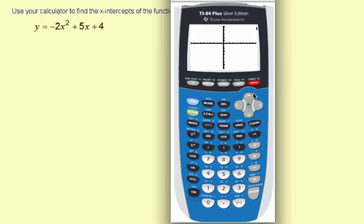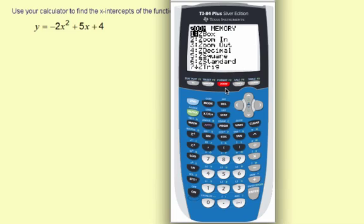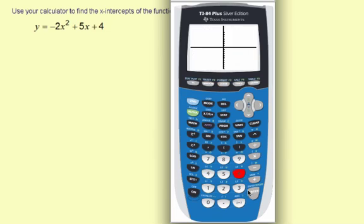Okay, now let me hit the graph button and see what it looks like. Okay, that looks pretty good. It looks like I could probably use a standard window though. It doesn't have to be this far down on the y. So I'm going to hit the zoom button, and then I'm going to choose 6, which is zoom standard. That's going to give negative 10 to 10 for the x and the y values. Yeah, it looks a little bit nicer.